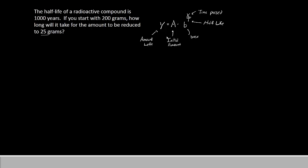Let's see which ones we know and which ones we don't know. The amount left is given to you because we want the amount to be reduced to 25 grams. The initial amount we also know because it says we start with 200 grams. Now for the base, because we are doing half-life, the base will be one half.